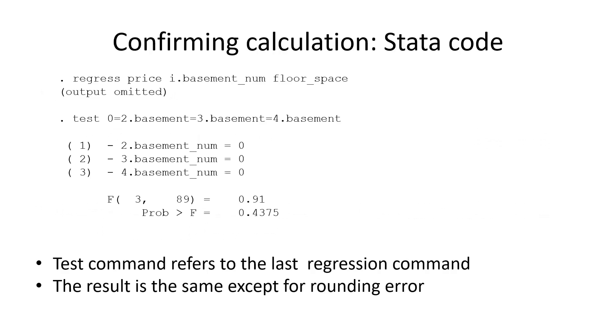A sanity check, if we want it, is to run the same thing in the software. Stata has a command called 'test.' It says we are testing that the second, third, and fourth coefficients equal zero. It translates what it thinks that means. We find out we get the same probability: 43%. Subject to rounding error, it's the same.